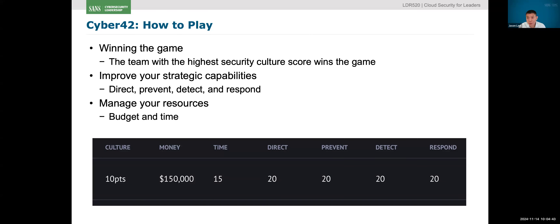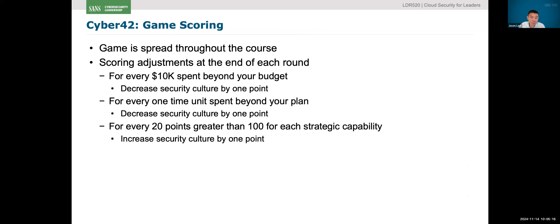Just as you do your regular day job, as you try to improve security state — which is the security culture — you're always looking at whether you can manage your budget. Right now you've got 150K. At the beginning, you've got a time unit of 15 units, and we're starting off with a culture point of 10. These are your starting scores. At the end of the game, after the three stages, some of you will make choices that are more expensive, some that take more time. If you overspend by 10K, we take one culture point away. If you overspend your time by one point, we take one culture point away.